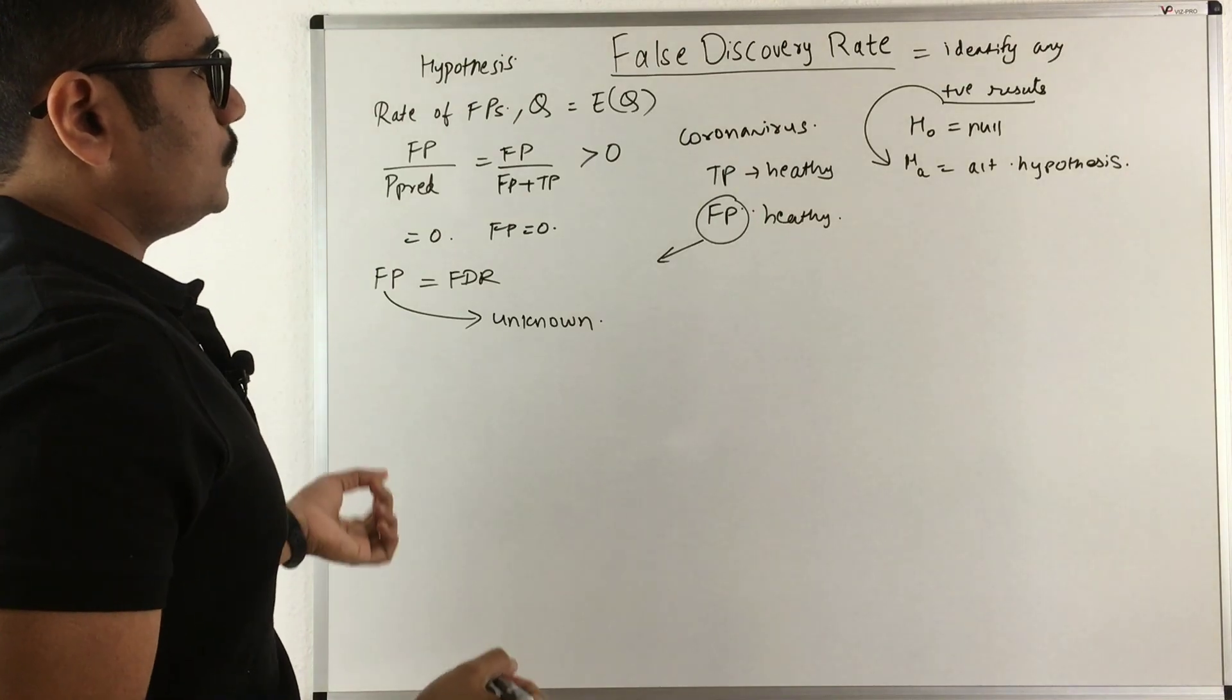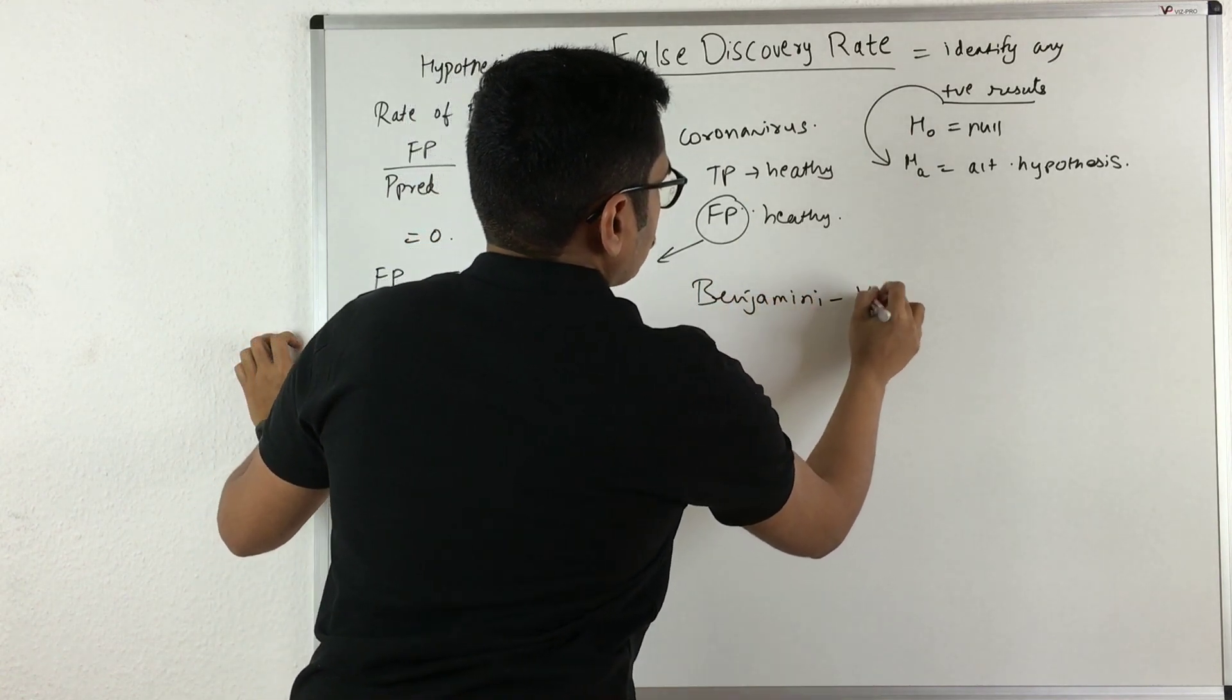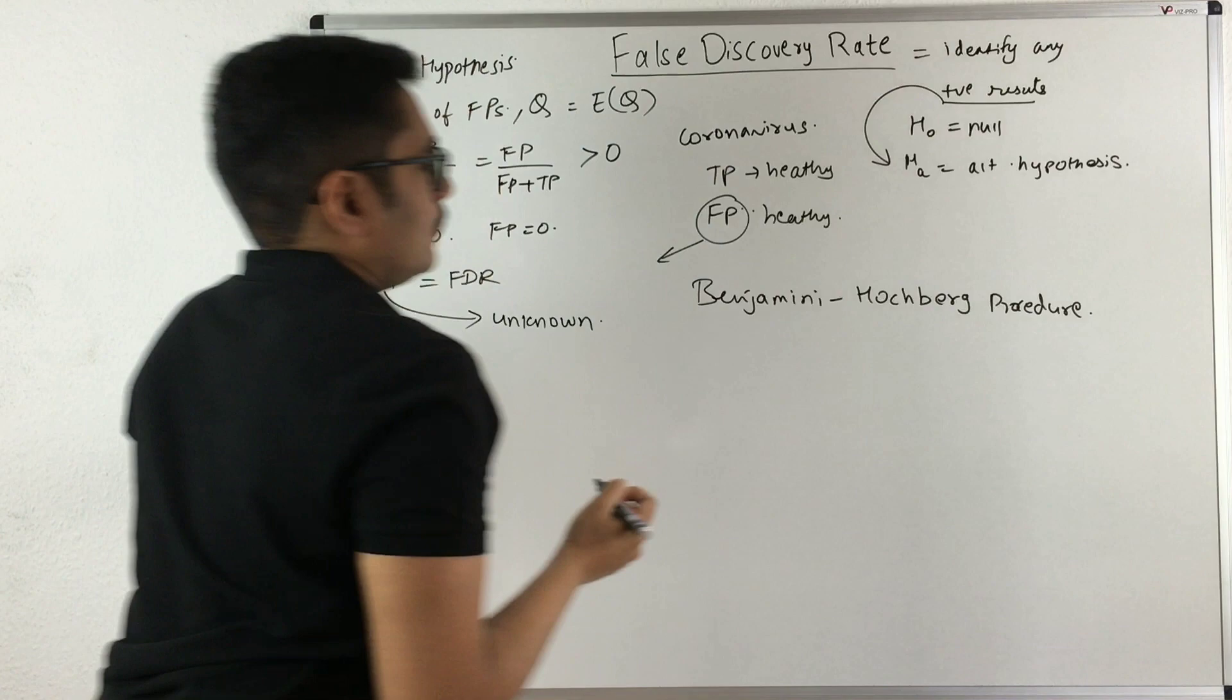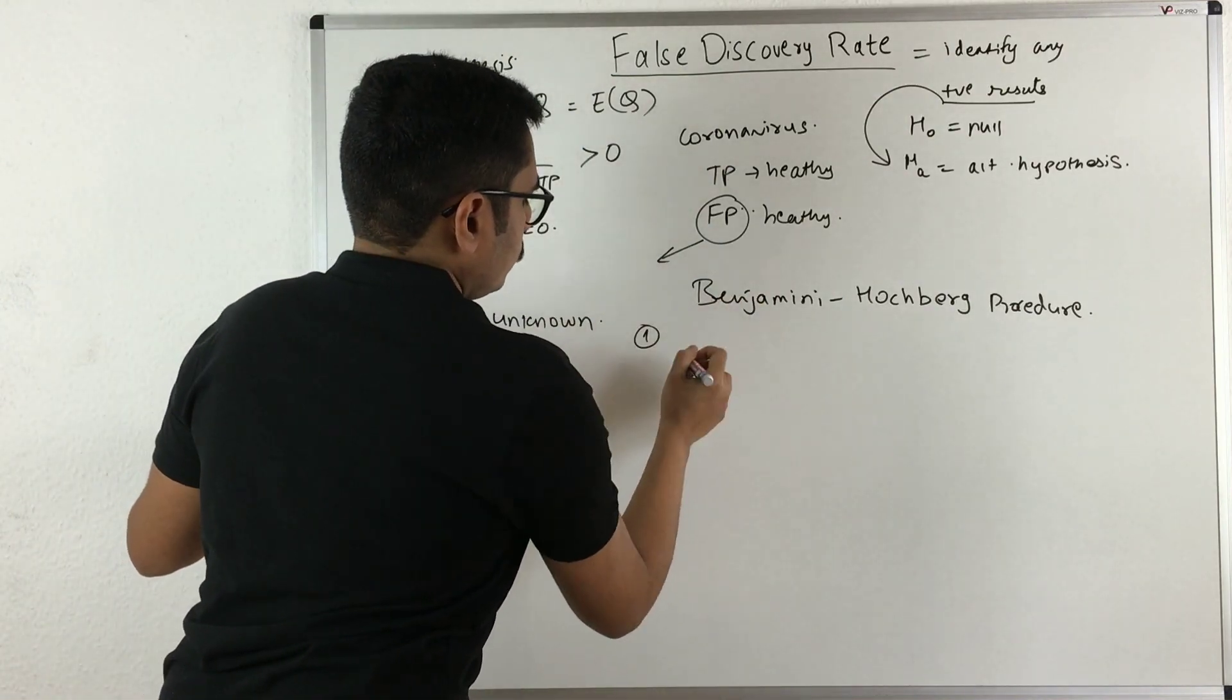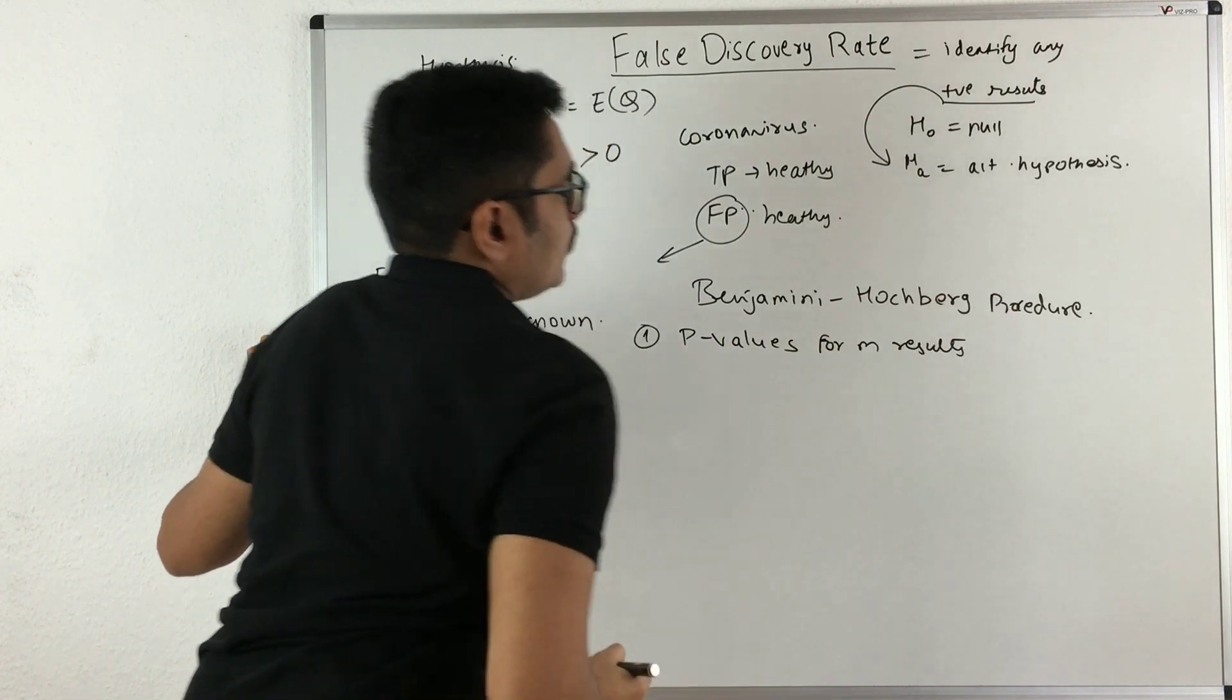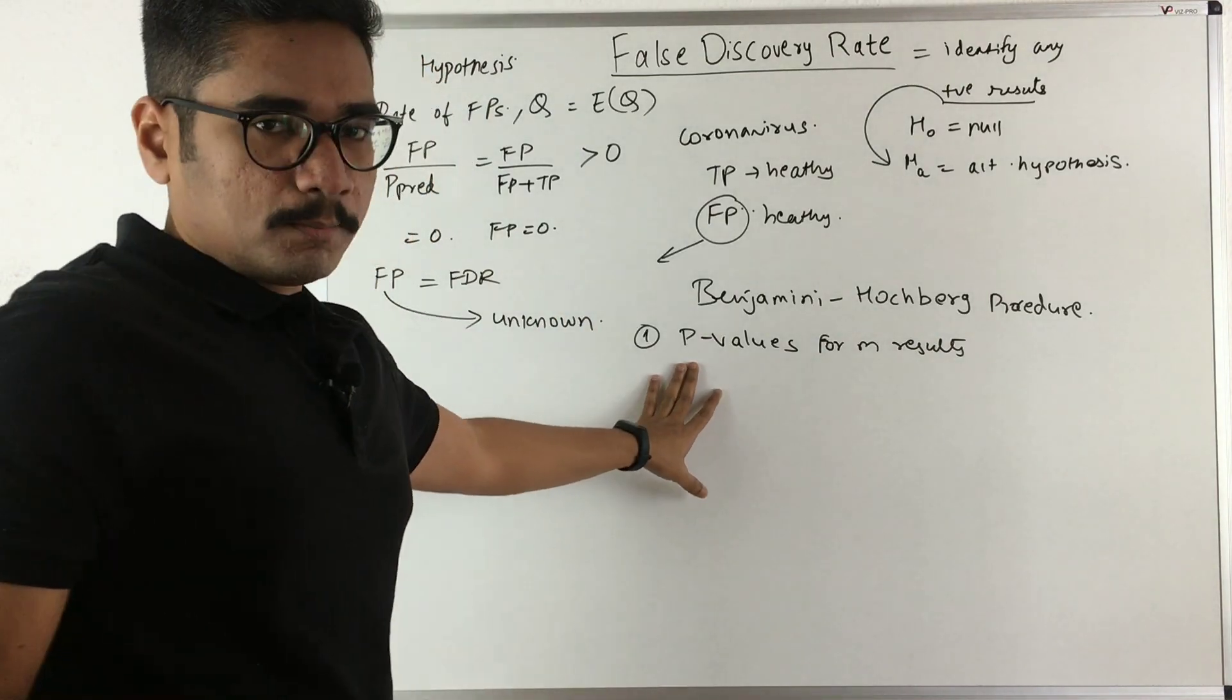A technique used to correct false discovery rate is called the Benjamini-Hochberg procedure. This technique computes all the p-values - you need all the p-values for your m results. At a clinic or hospital, you have many patients and you've collected their samples, so you compute their probability values.